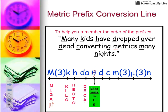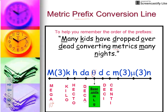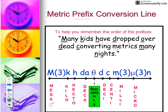After milli, there's another jump of three, and we have our third M word: micro, as in micrograms or micrometers — a very tiny amount. The symbol for micro is a Greek letter that looks like a U with a little tail on it. Then after another jump of three, we have our last prefix: N for nano. So again: many kids have dropped over dead, converting metrics many nights.